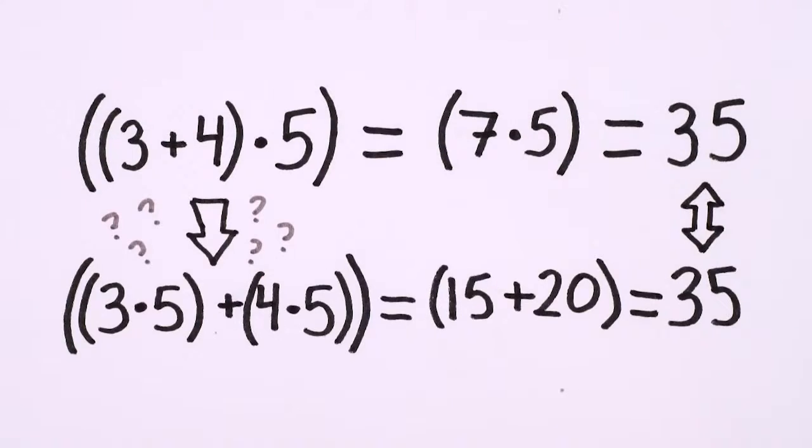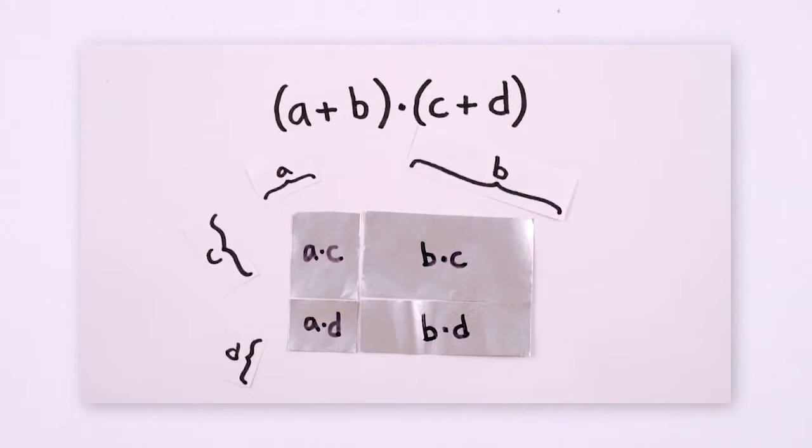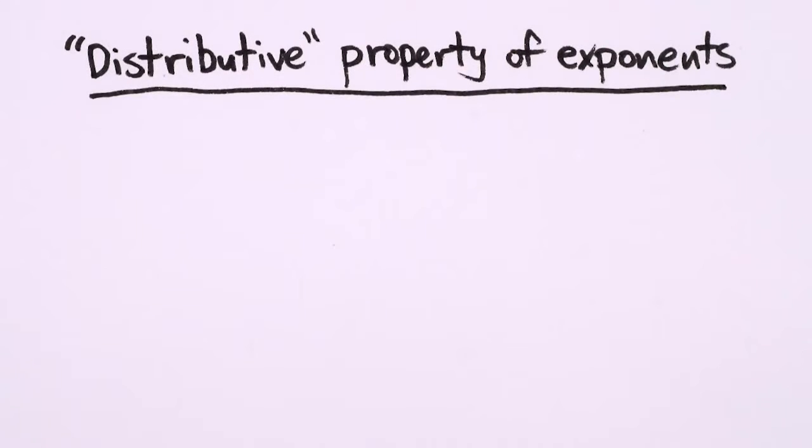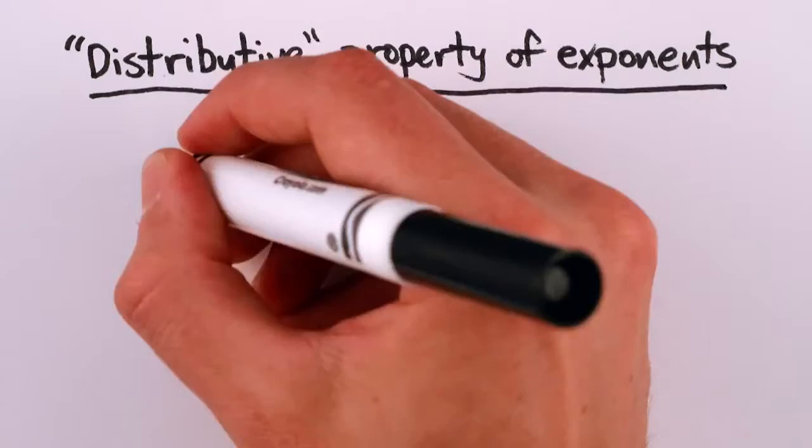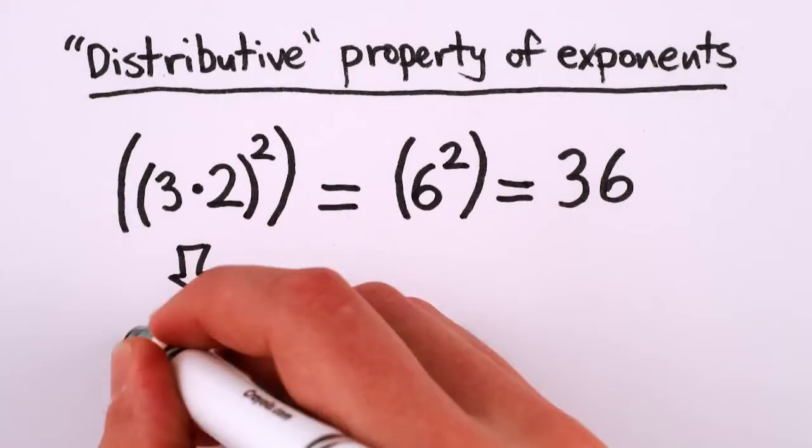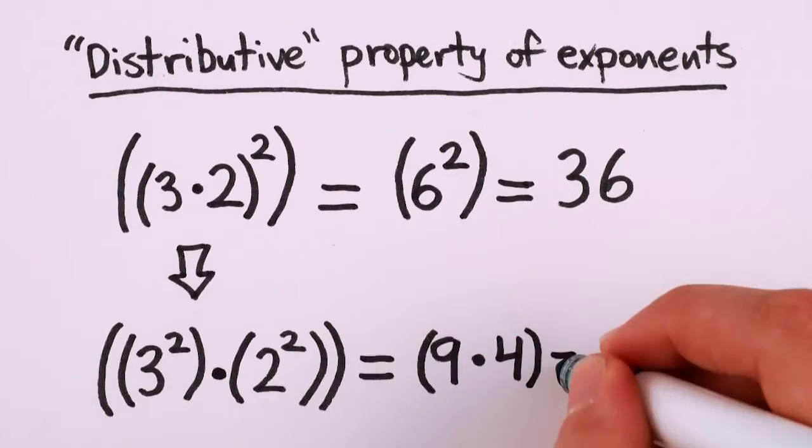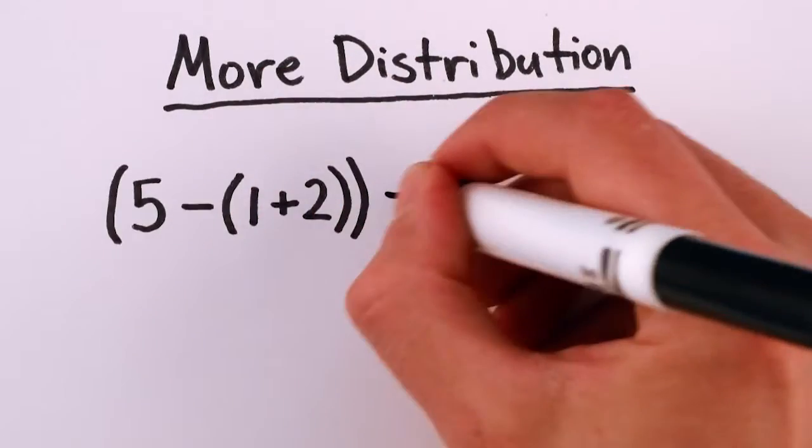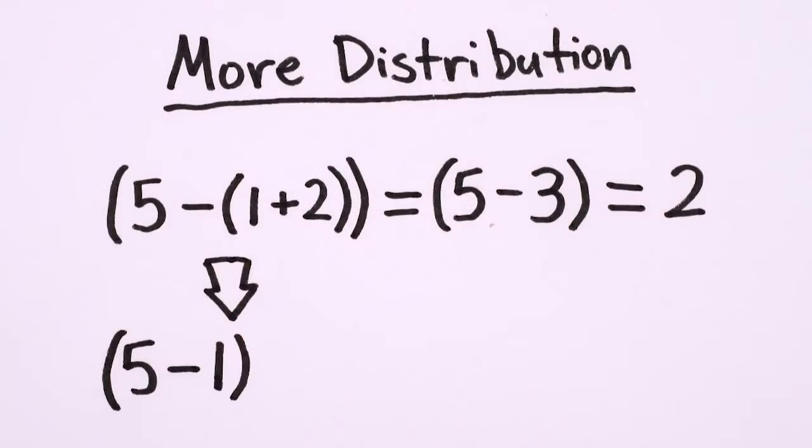And how do we know multiplication distributes? One way is to draw rectangles, but I've done that before. The same rearranging can be done for exponentiation and multiplication. 3 times 2 all squared, or 6 squared equals 36, is the same as 3 squared times 2 squared, 36. It even works for addition and subtraction. 5 minus 1 plus 2 is 5 minus 1 minus 2.